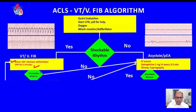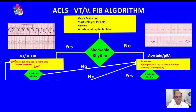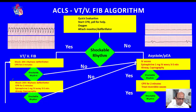After two minutes, we again reassess the rhythm. If the rhythm is still shockable, we proceed further. If the rhythm is asystolic or agonal, we go through the asystole or pulseless electrical activity algorithm. Assuming the rhythm remains shockable, we move to the next phase and again deliver a prompt 200-joule biphasic shock, then continue CPR for two more minutes.